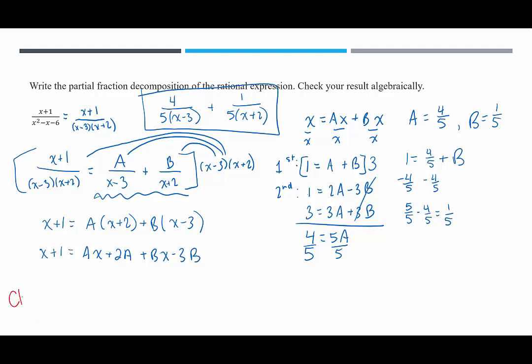Now let's check our work. To check, we want to add the two expressions and make sure we really do end up back with what we started with. So we want to add 4 over 5 times x minus 3 to 1 over 5 times x plus 2. And I have a least common denominator here of, I need a factor of 5, I need a factor of x minus 3, and a factor of x plus 2.